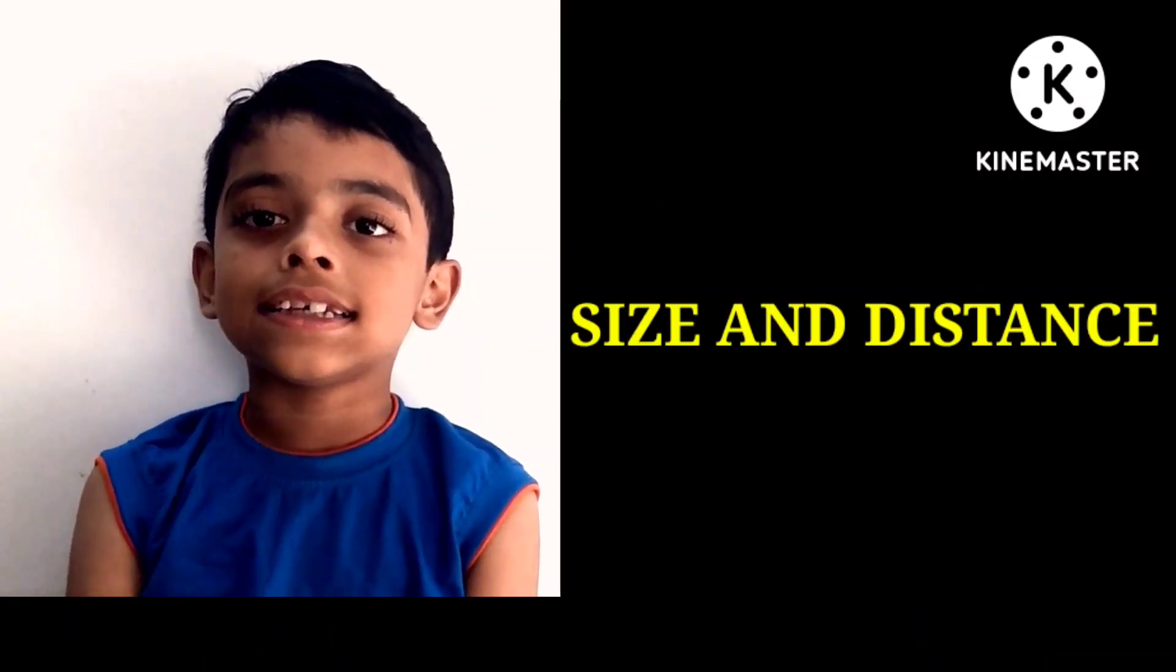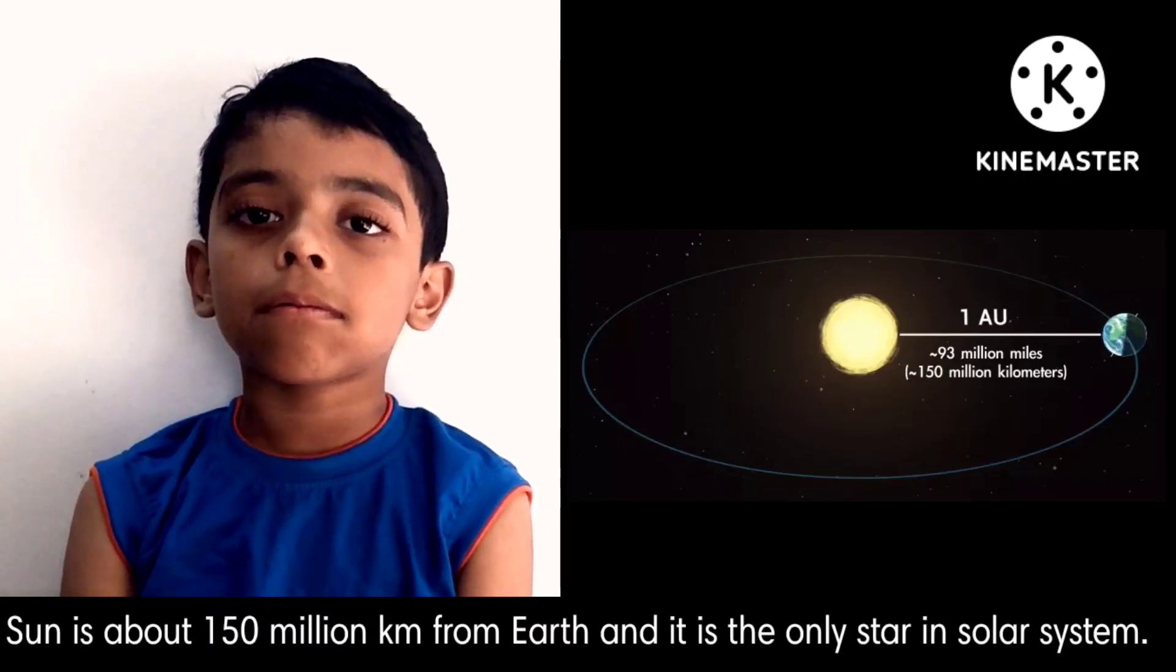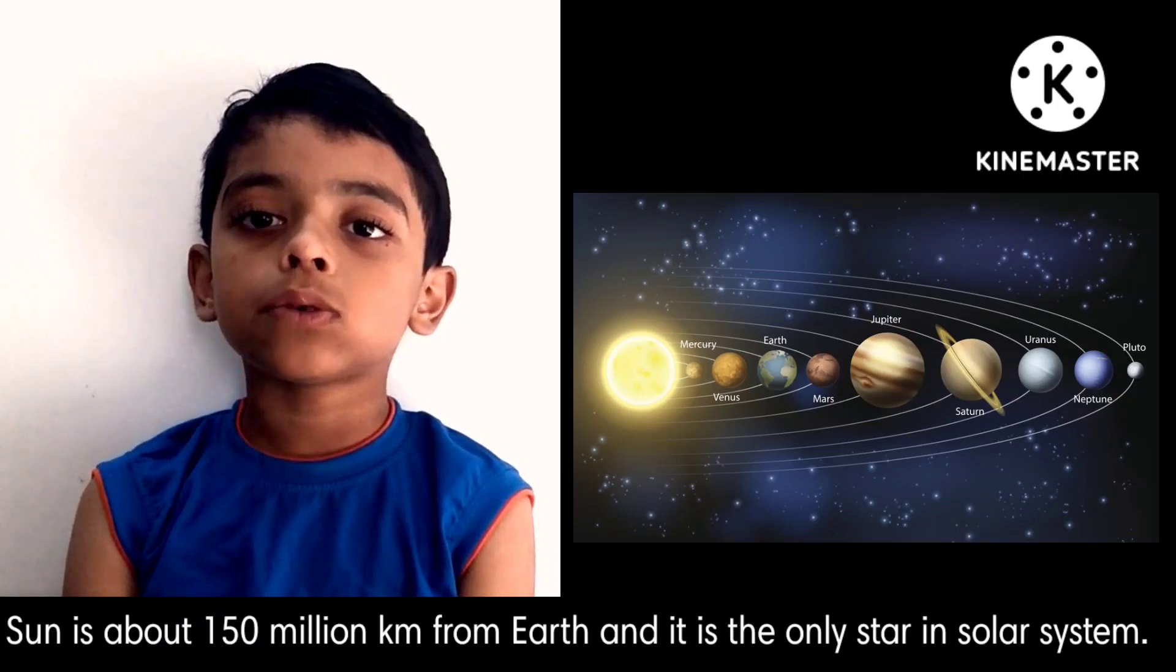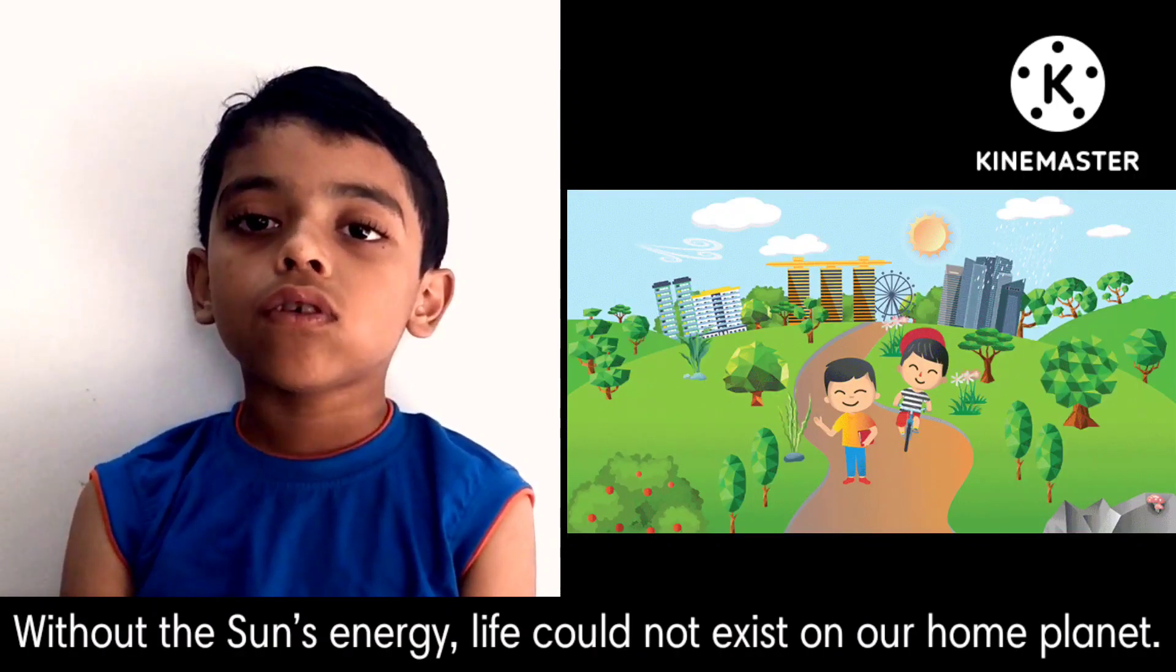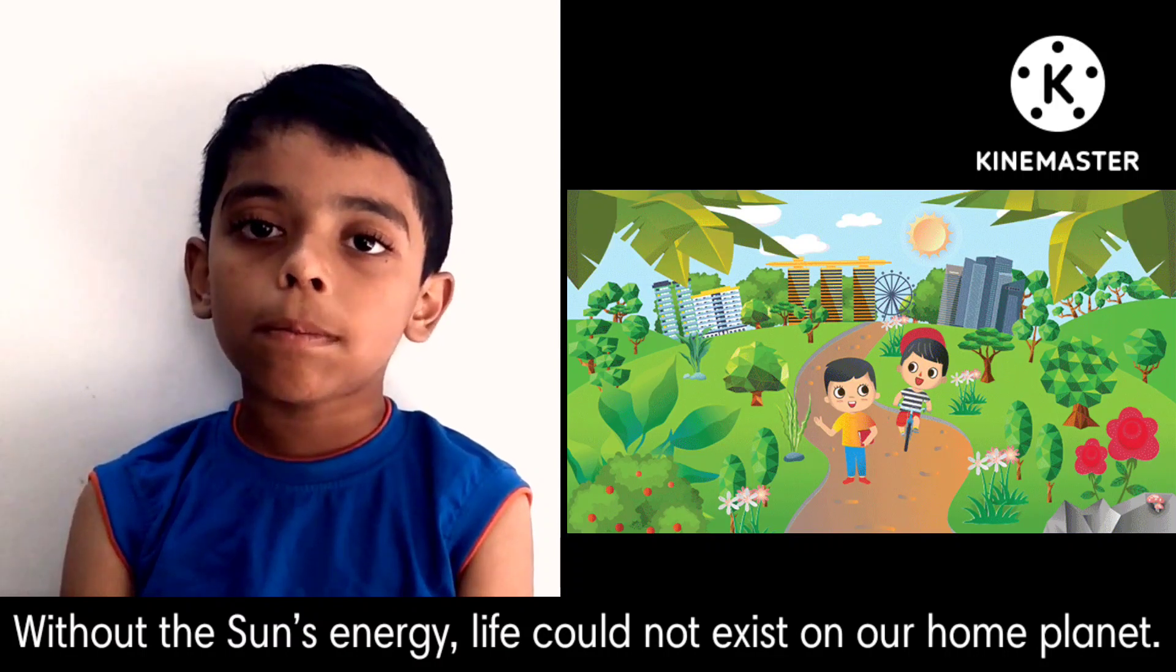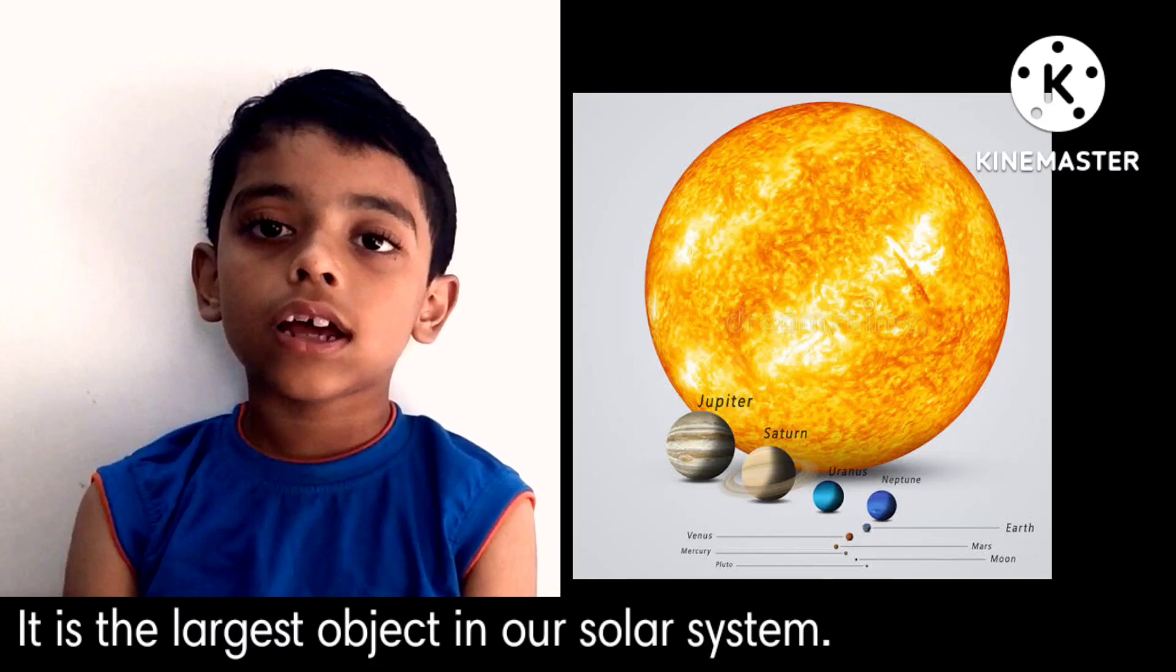Size and Distance: Our Sun is about 150 million kilometers from Earth and is our solar system's only star. Without the Sun's energy, life could not exist on our home planet. It is the largest object in our solar system.